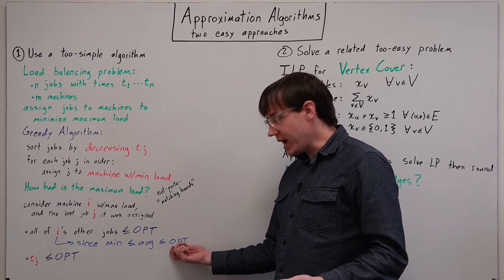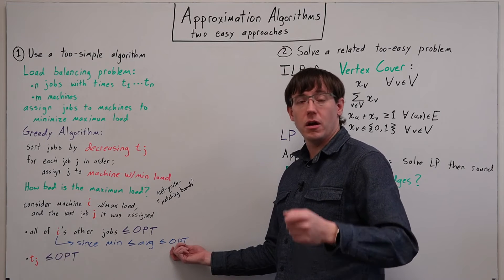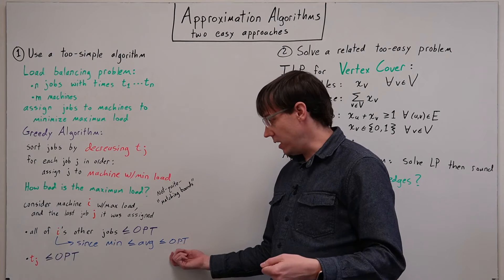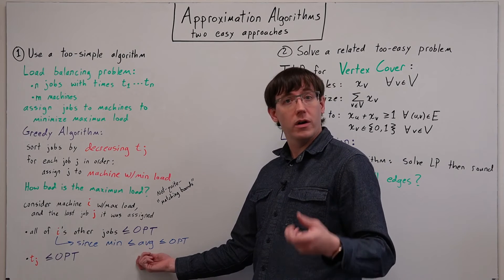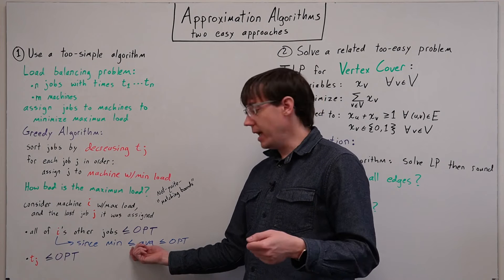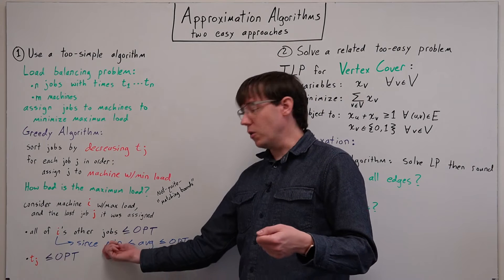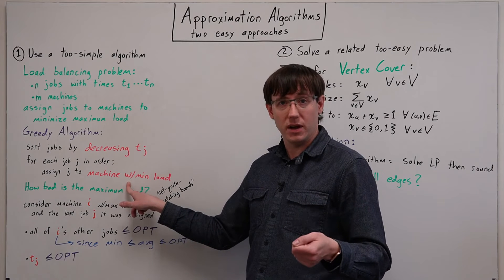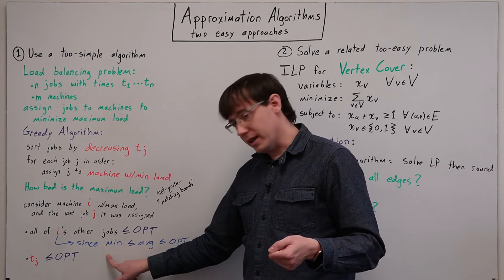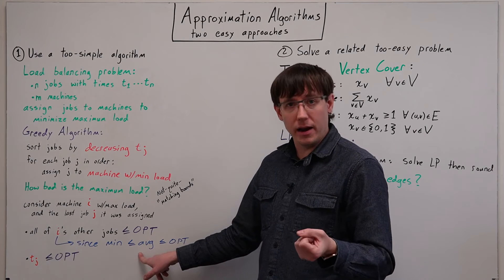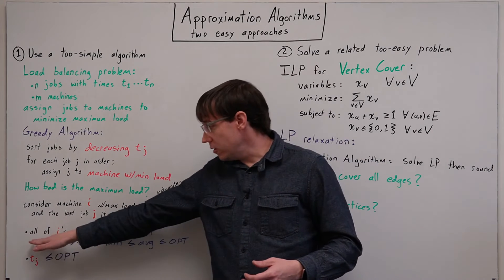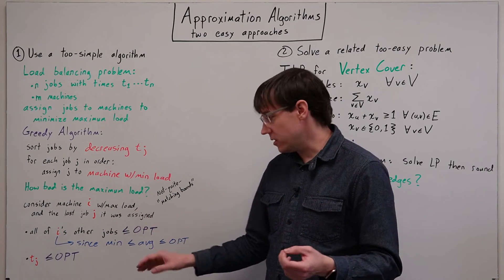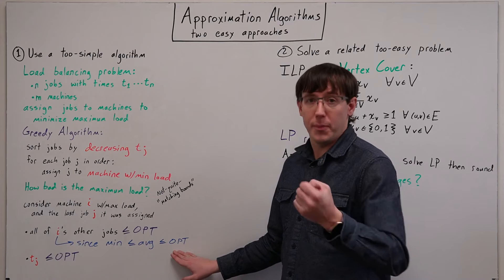So since the maximum load on any machine under the optimal solution must be at least the average load on any machine when all the jobs are assigned, and the minimum load at a given point before all of the jobs have been assigned is less than or equal to the average load at the end — we know that the load on this machine before it got its last job must be less than or equal to the optimal solution.